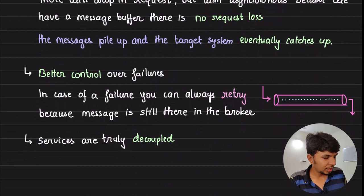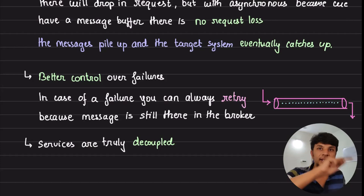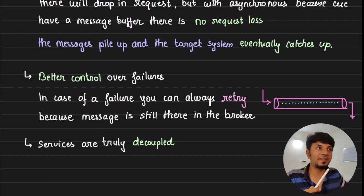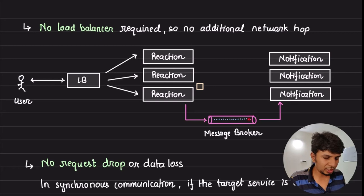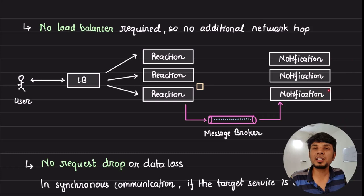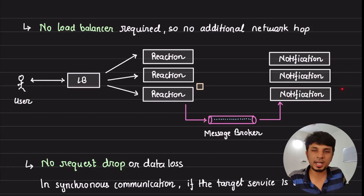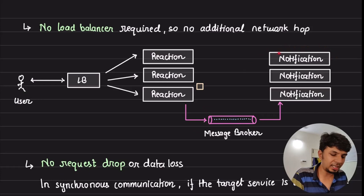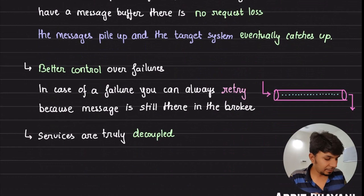You also get better control over failures. In synchronous communication, if a request fails the user has to retry — a poor experience. With asynchronous communication, you get built-in retry. If the notification server crashes while processing a message, when another server comes up it reads the same message and retries. If your email or WhatsApp provider is down, the notification service can retry independently — perhaps three times — without affecting the end user's experience. Failed messages go to a dead-letter queue.